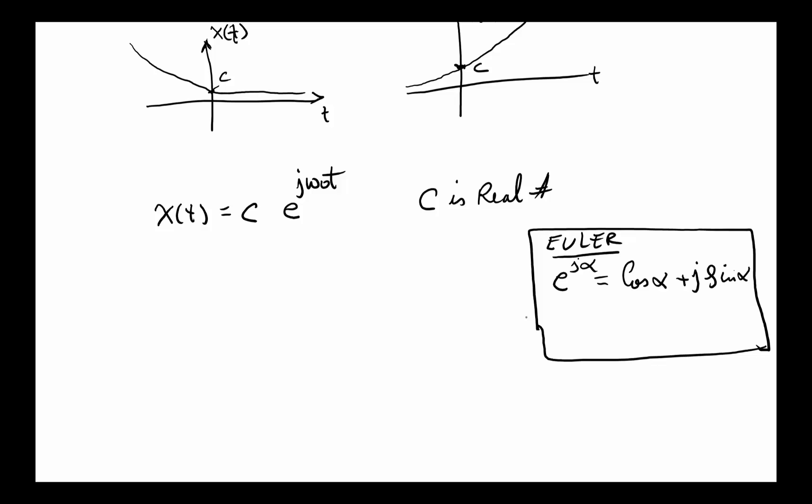So now if you look at the real portion of this, you'll see that e^(jω) is simply a cosine signal. So if I apply the Euler identity we just discussed, then my equation would be c cos(ω₀t) + jc sin(ω₀t).